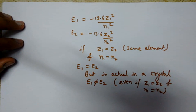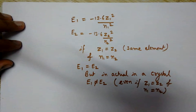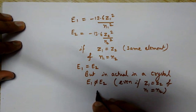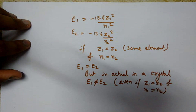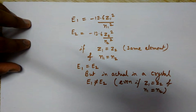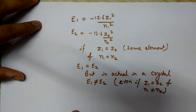This is because both atoms have a different arrangement of atoms around them. In any crystal, as per the location of that atom in the crystal, there will be forces coming from many sides and various directions on that atom, and this will change the energy.